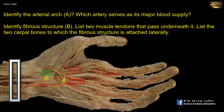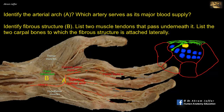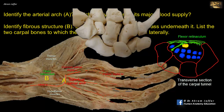The muscles of the thenar and hypothenar eminence are partially attached to the retinaculum. Because the carpal bones are shaped to form a curve that is concave on the flexor surface, the attachment of the flexor retinaculum to the most medial and most lateral carpal bones converts the curve into a fibroosseous tunnel called the carpal tunnel. Laterally, the retinaculum is attached to the tubercle of the scaphoid and the ridge of the trapezium; on the ulnar side, it is attached to the pisiform and the hook of the hamate.